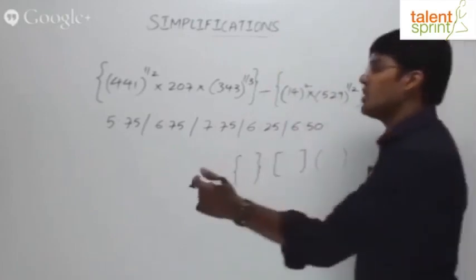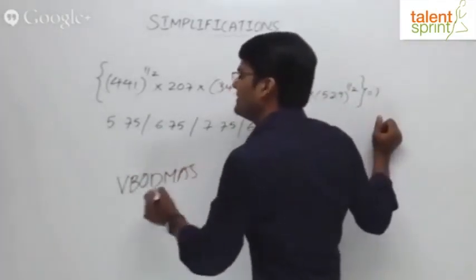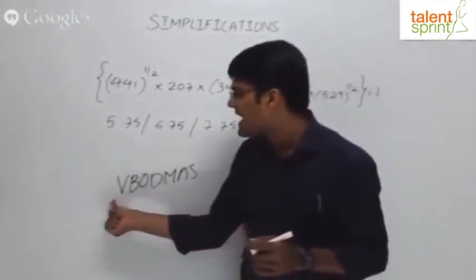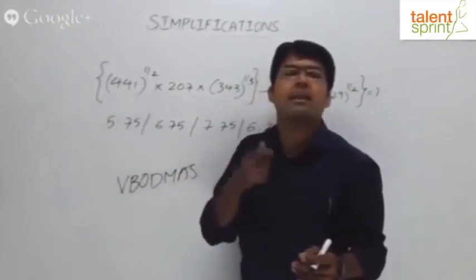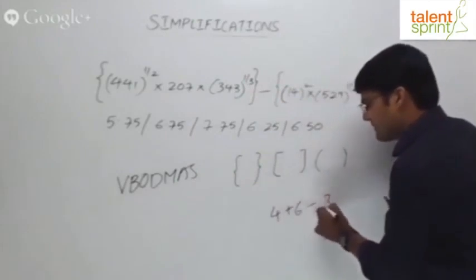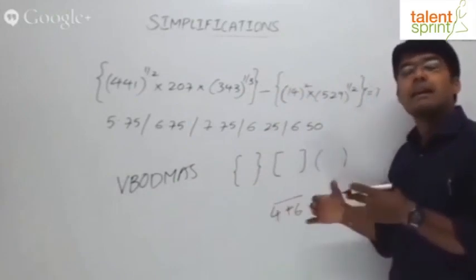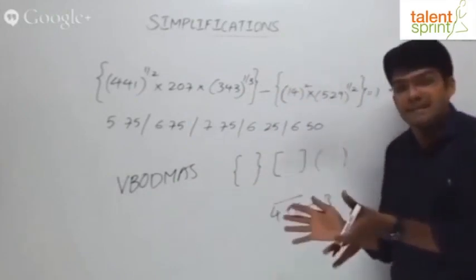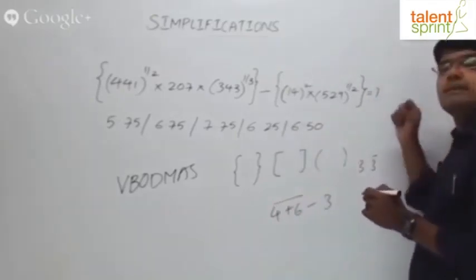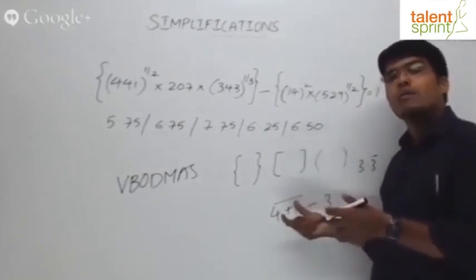Strictly speaking, the rule is not BODMAS, it's VBODMAS. What does this V stand for? V stands for vinculum, which is another kind of bracket. For example, 4 plus 6 minus 3, and if it is given this way, this is known as a vinculum. A bar. This is a kind of special bracket.